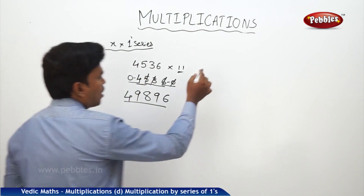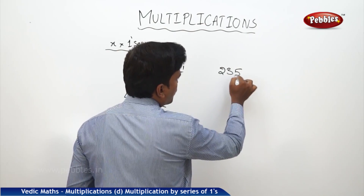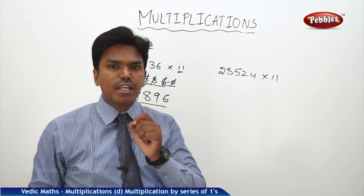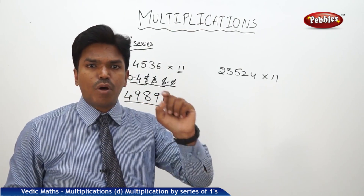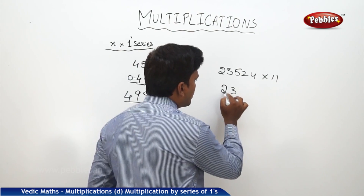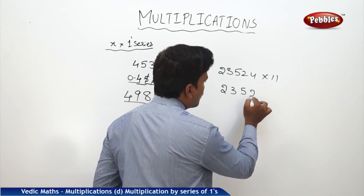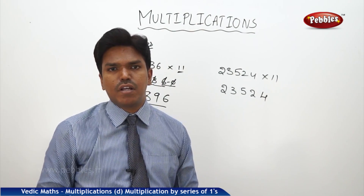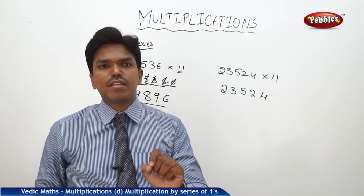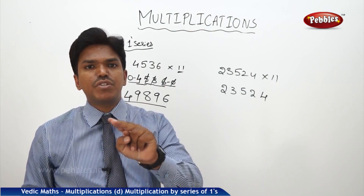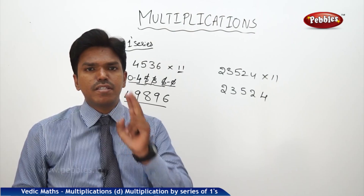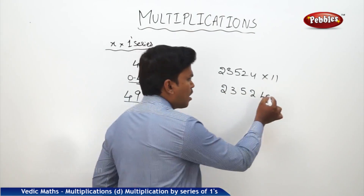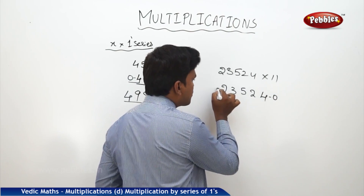One more example: suppose 23524 into 11. Whenever you are multiplying any given number by a series of 1s, drop that number as it is first: 23524. I have dropped the number. Now, how many number of 1s are there? Two 1s. Since there are 2 ones, add one zero after the number as well as before the number.